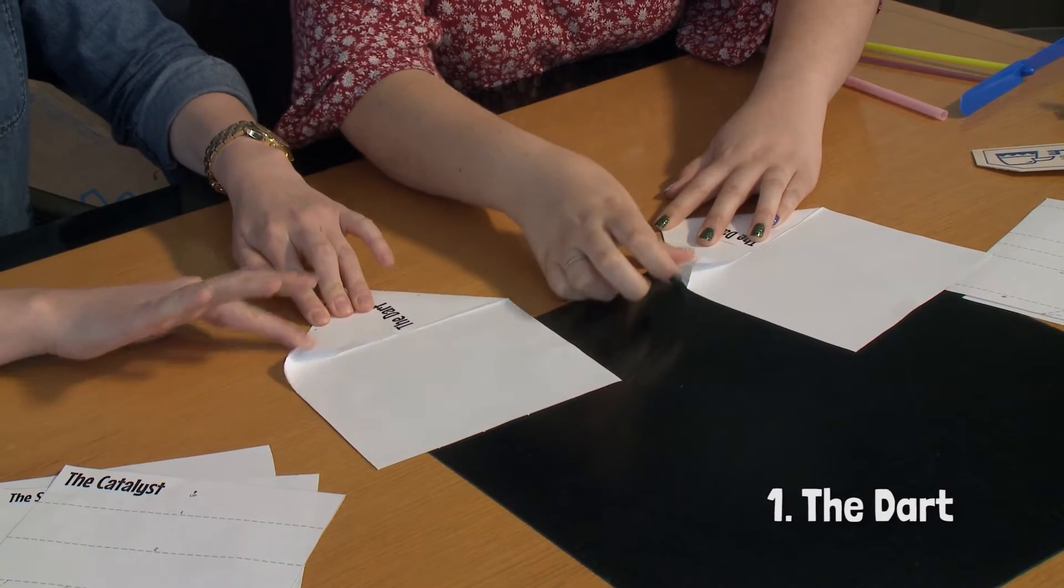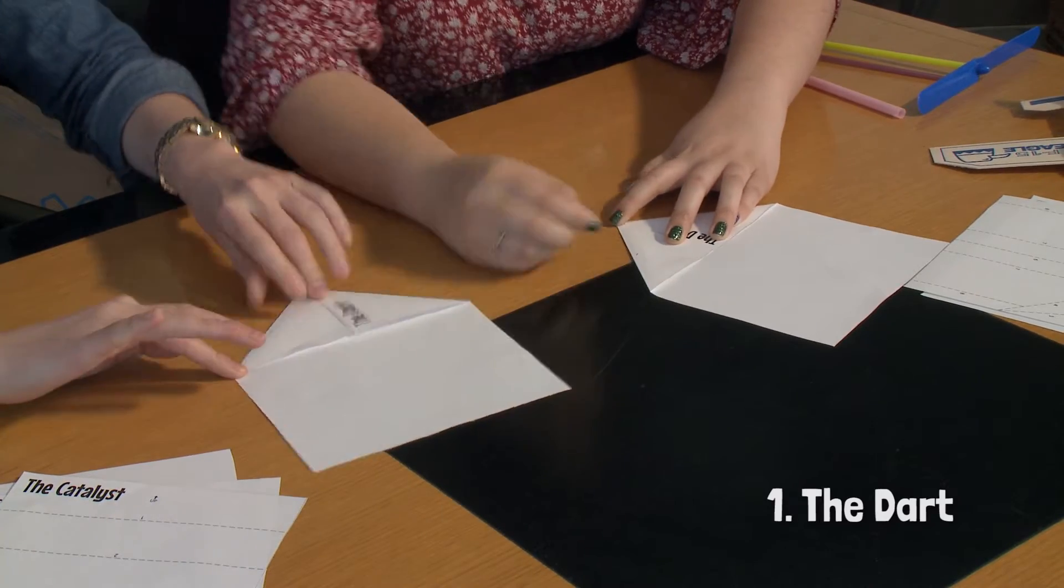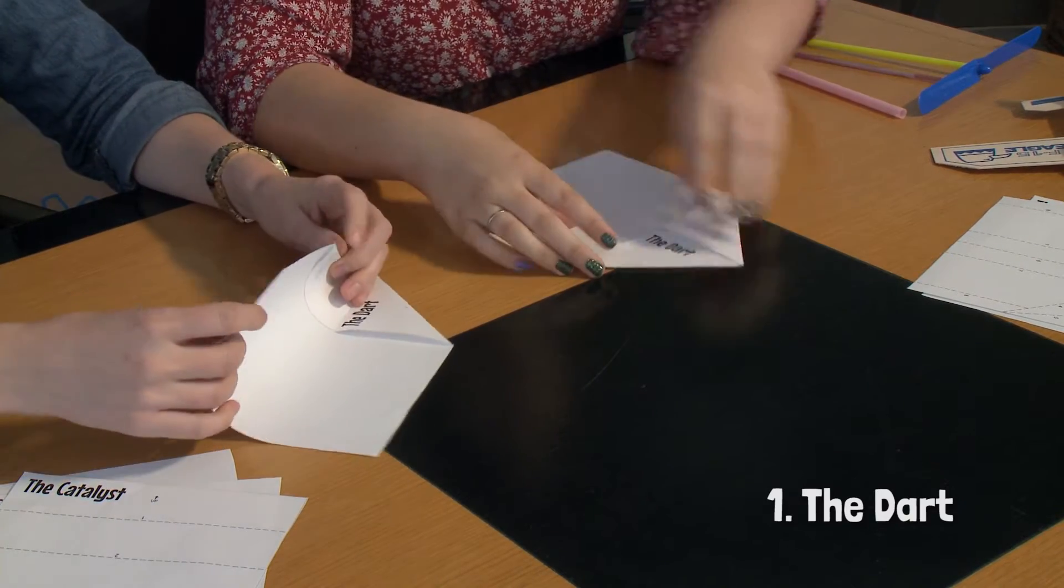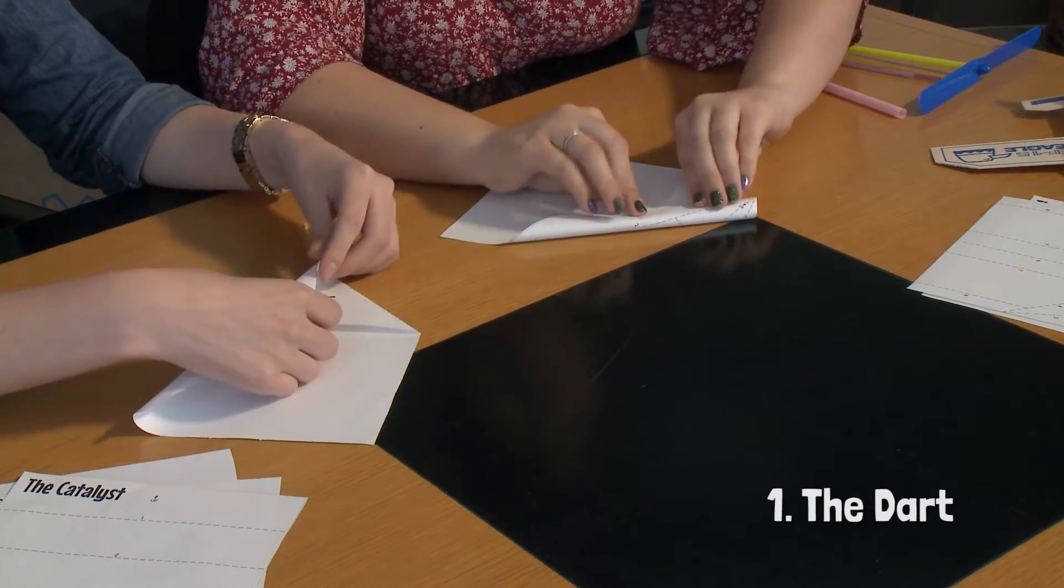I'm not so good at making these lines. There we go. You can use your nails to smooth them out, and then we're going to fold it again so that we see line two.